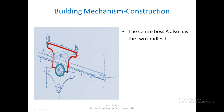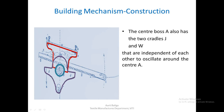There is a cradle W and another cradle J. The red one is cradle W and the purple one is cradle J. These two cradles are independent of each other and can oscillate around center A. The rack S from the earlier slide, which engages with pinion R centered around boss A, is actually a part of upper cradle W.